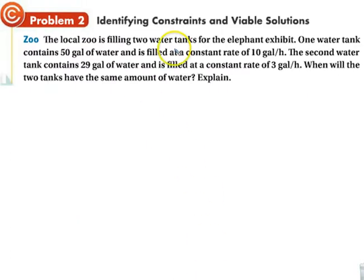The local zoo is filling two water tanks for the elephant exhibit. One water tank contains 50 gallons of water and is filled at a constant rate of 10 gallons per hour. The second water tank contains 29 gallons of water and is filled at a constant rate of 3 gallons per hour. When will the two tanks have the same amount of water?